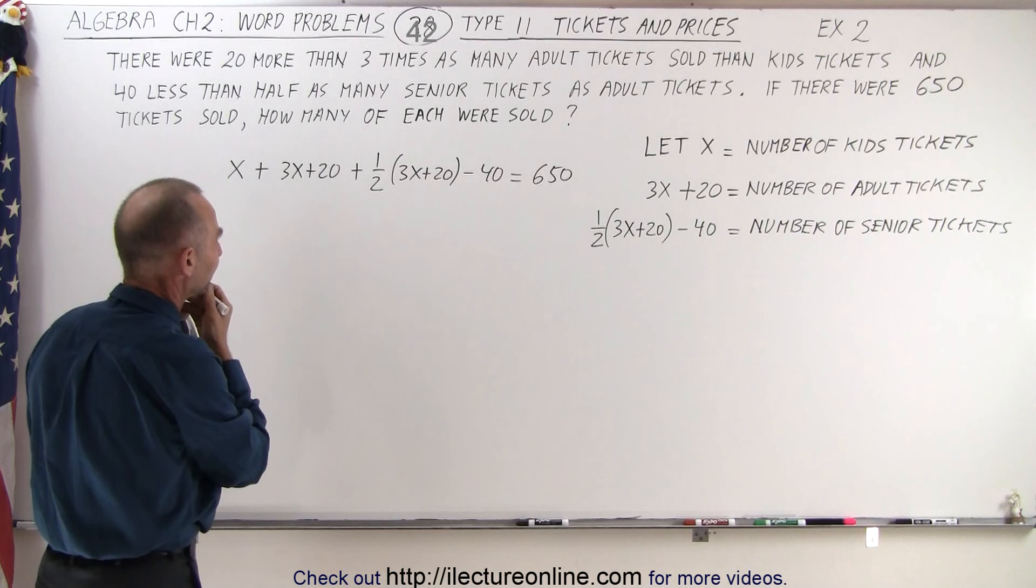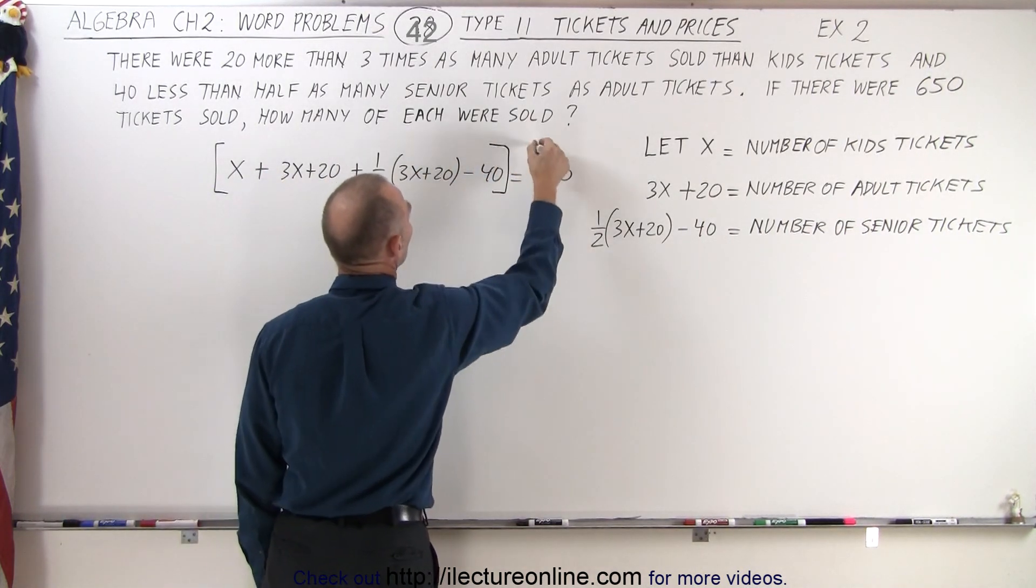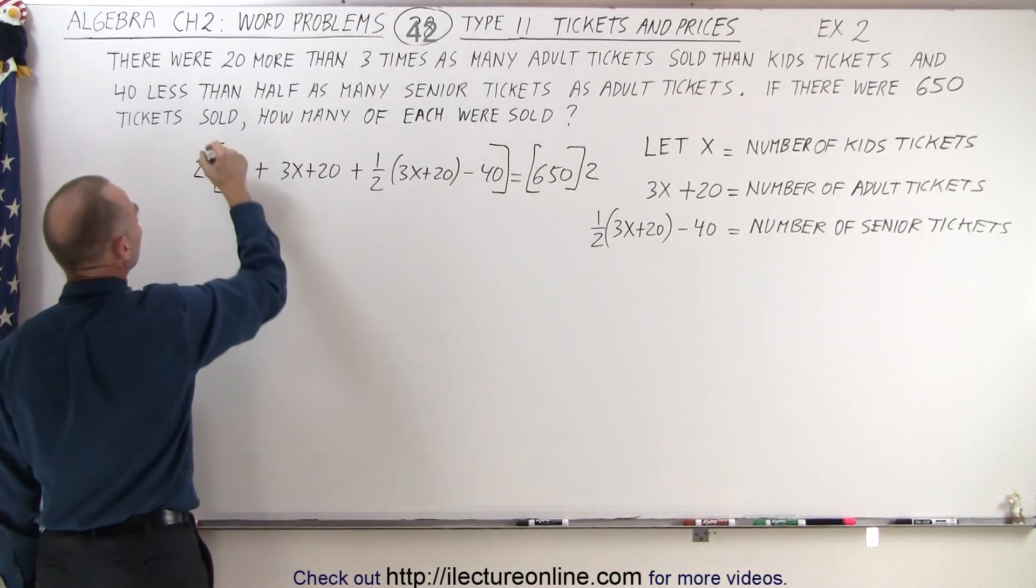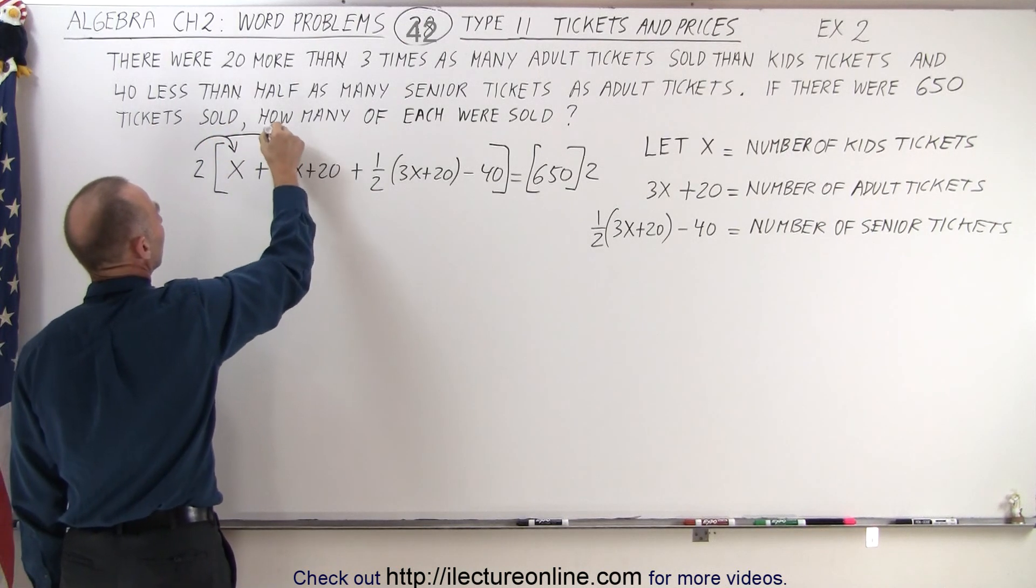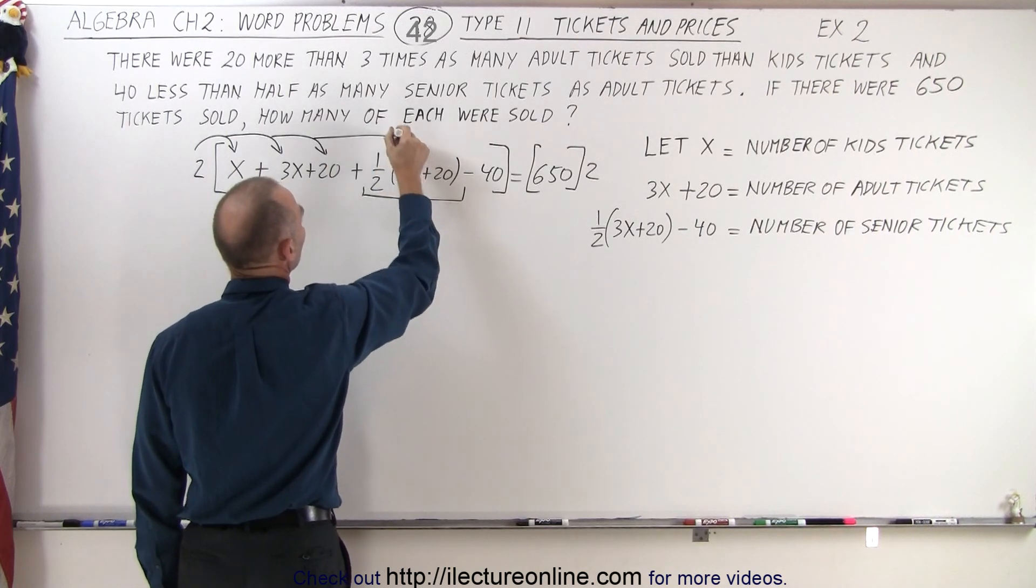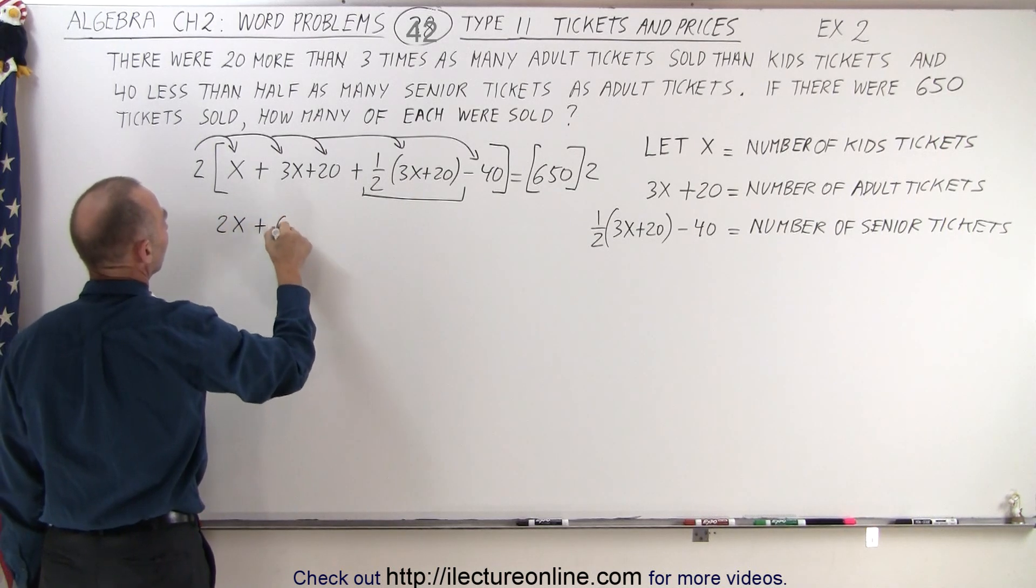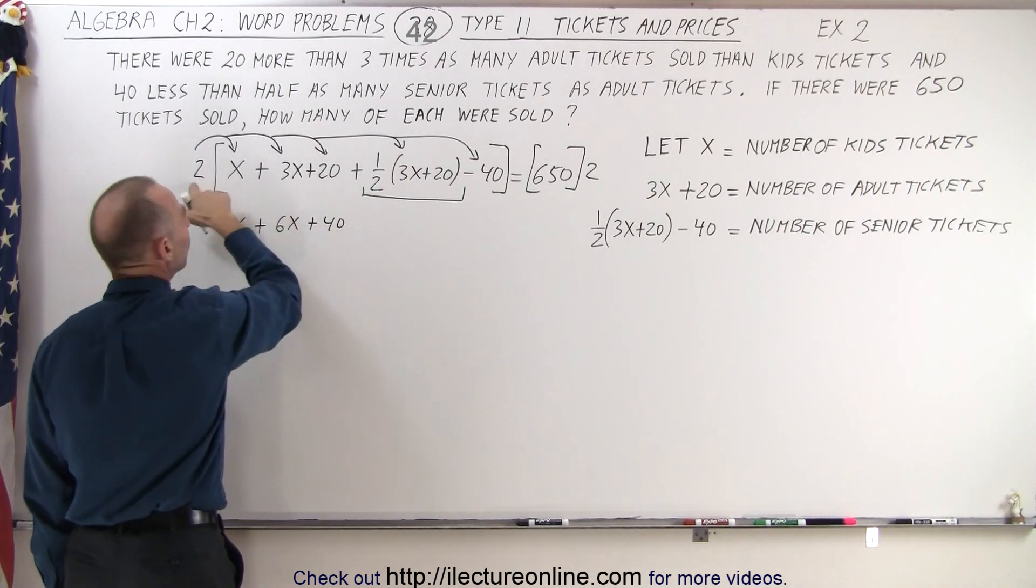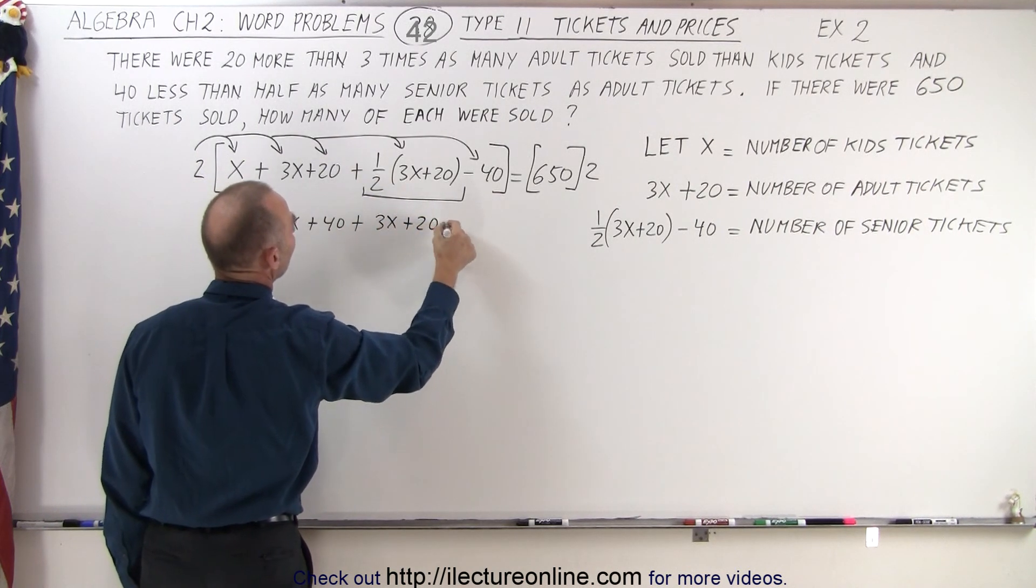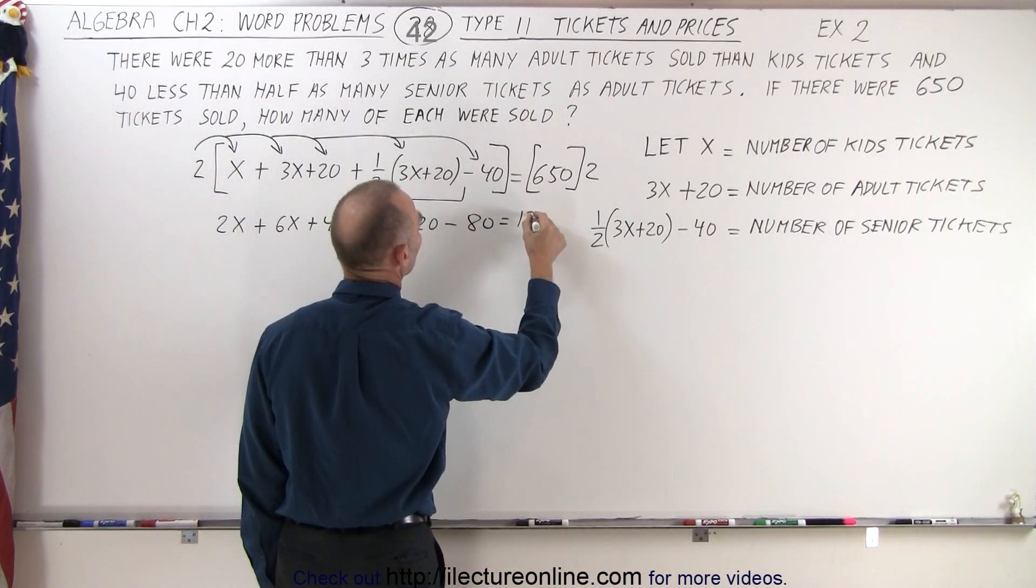Now we're ready to solve for x. First we want to get rid of the one half, so we're going to multiply both sides of the equation by two. If we do that, notice the two needs to distribute on the x, the 3x, the 20, the whole portion right here which is a single term, and the minus 40. So here we get 2x + 6x + 40. The two will negate the one half. We're left with 3x + 20 - 80, because two times minus 40 is minus 80. And that should equal 1300.